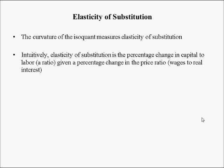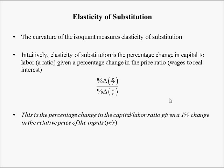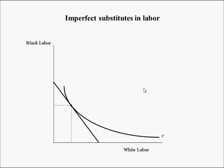The curvature of isoquants measures the elasticity of substitution between capital and labor — intuitively, the percentage change in the capital-to-labor ratio given a percent change in the price ratio (W/R). This elasticity might be, for example, 0.5, meaning a 1% change in relative prices produces a 0.5% change in the capital-labor ratio.